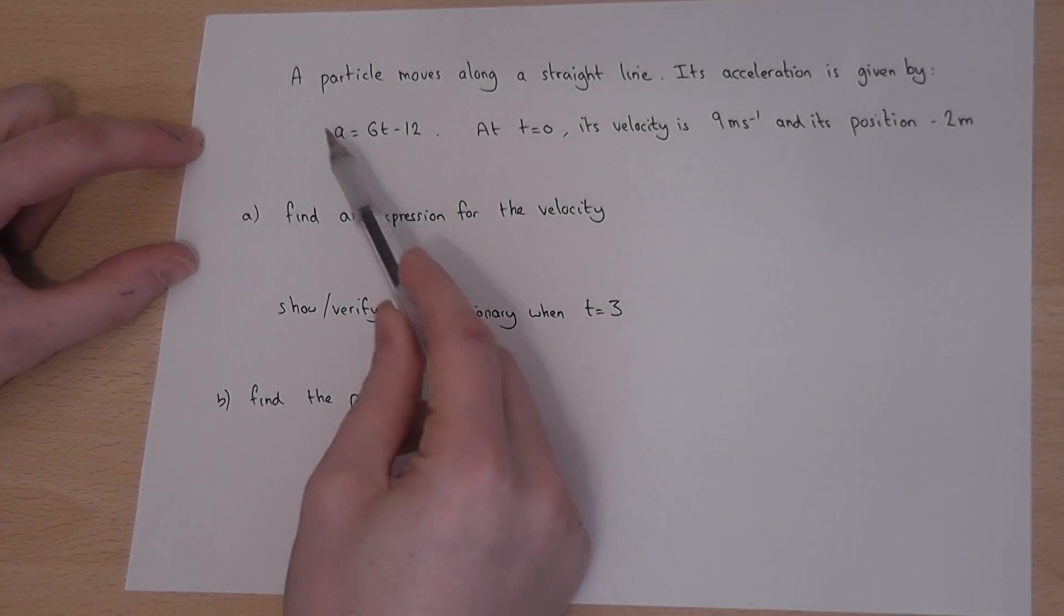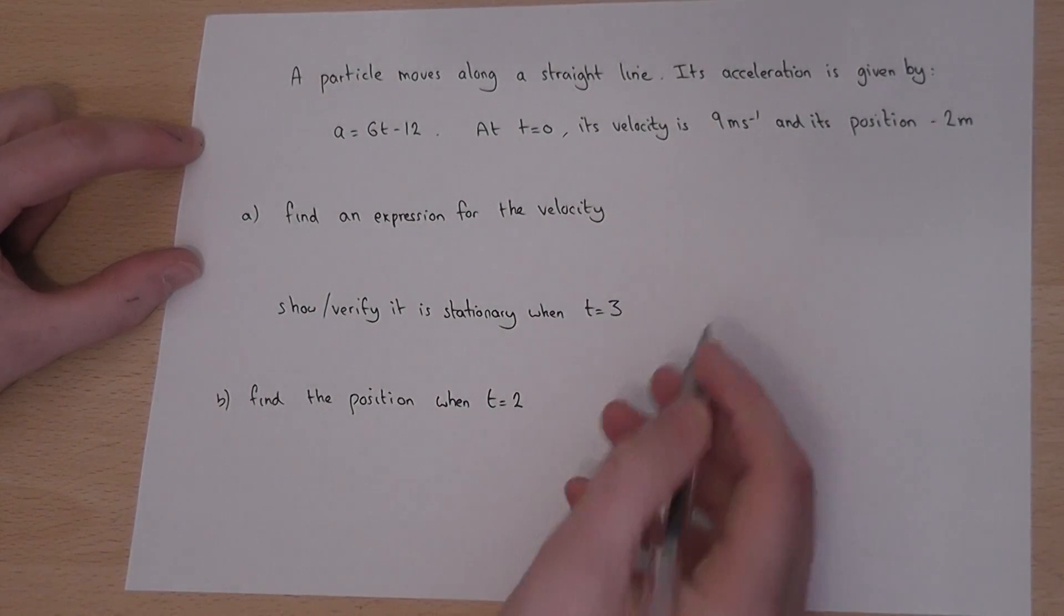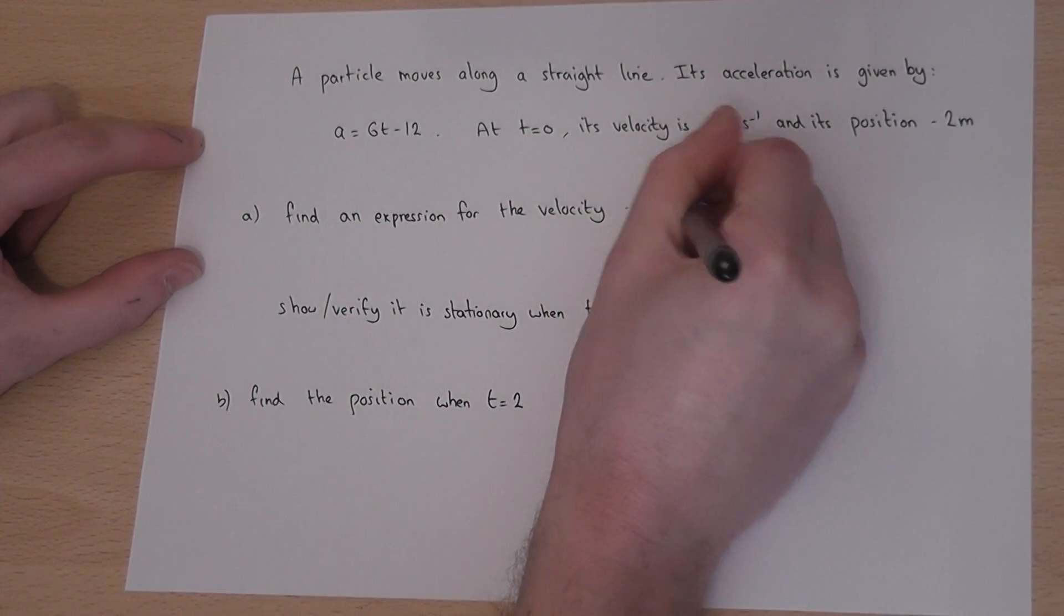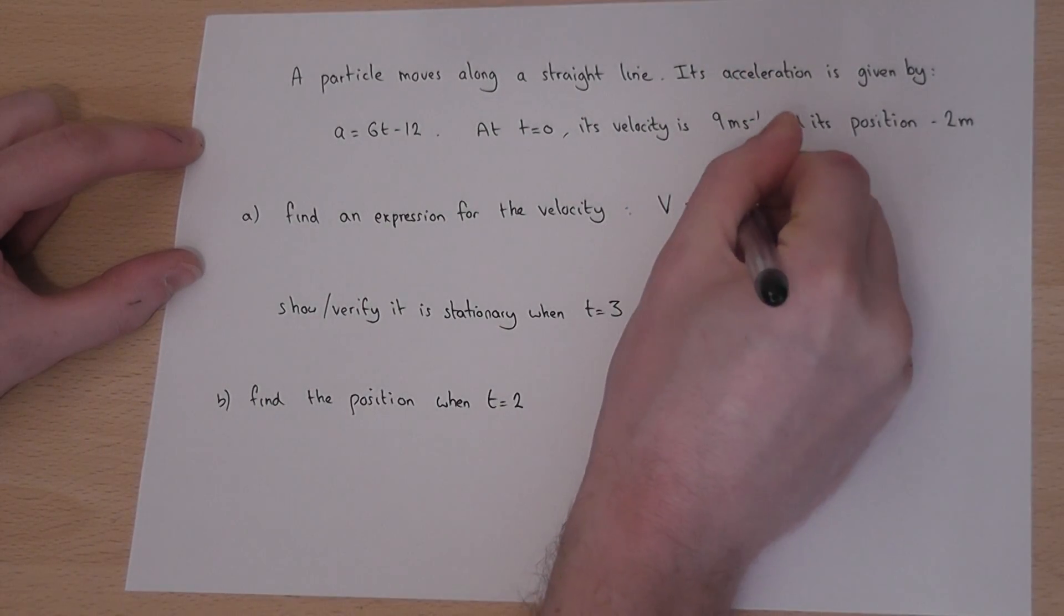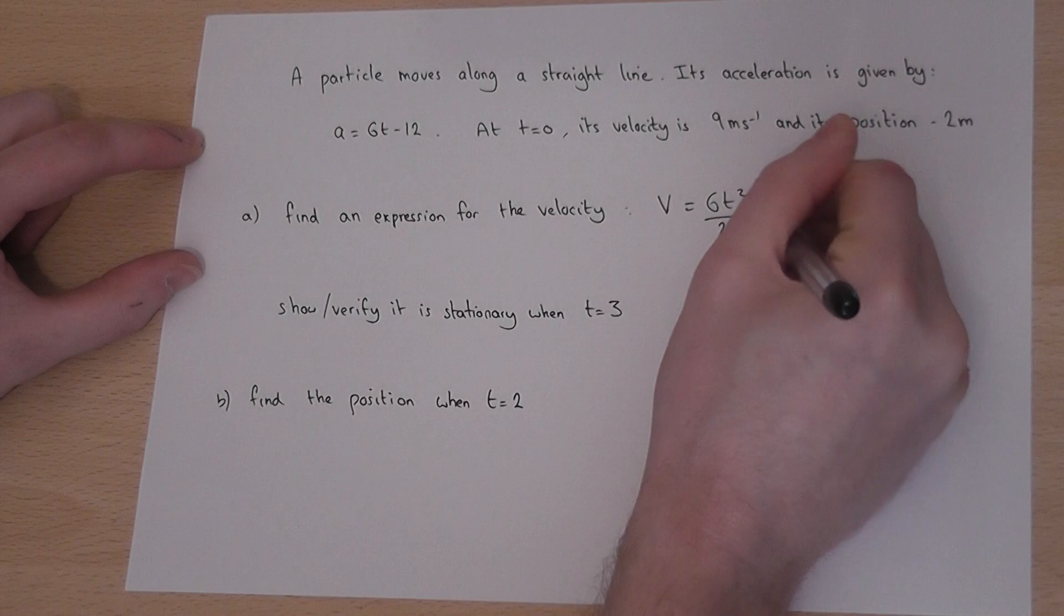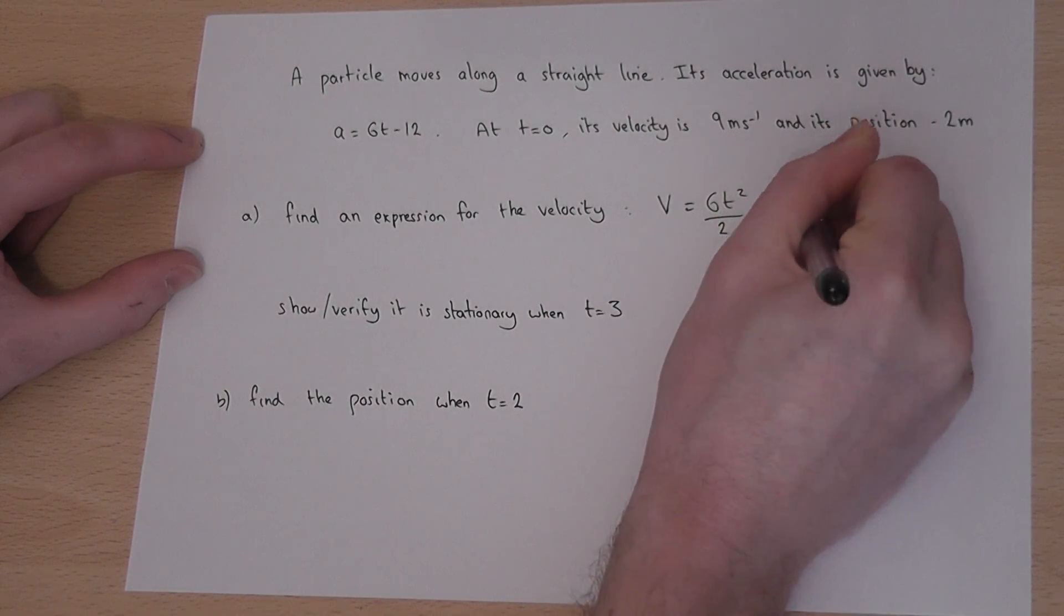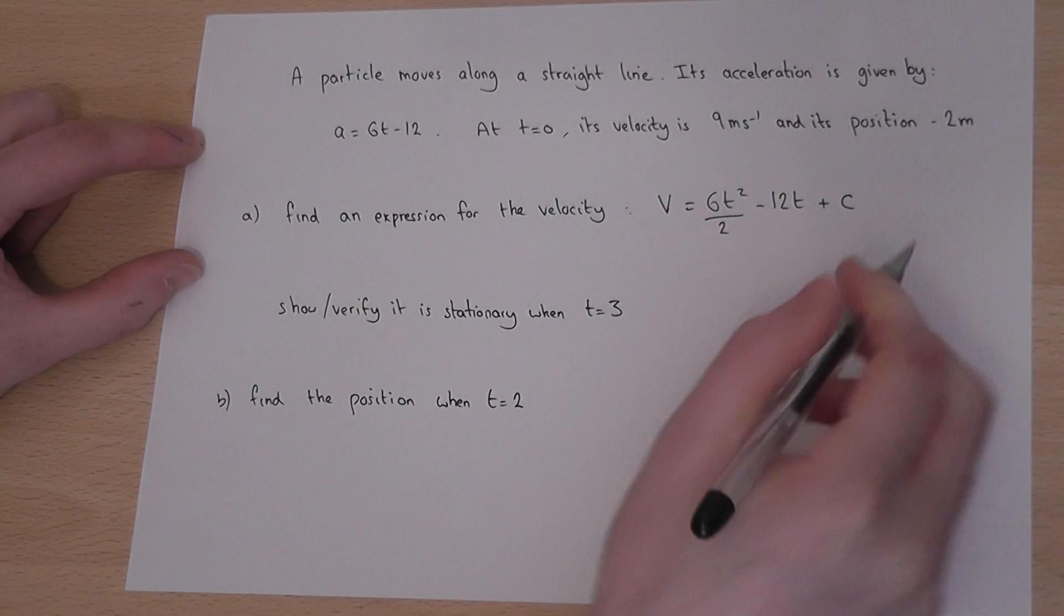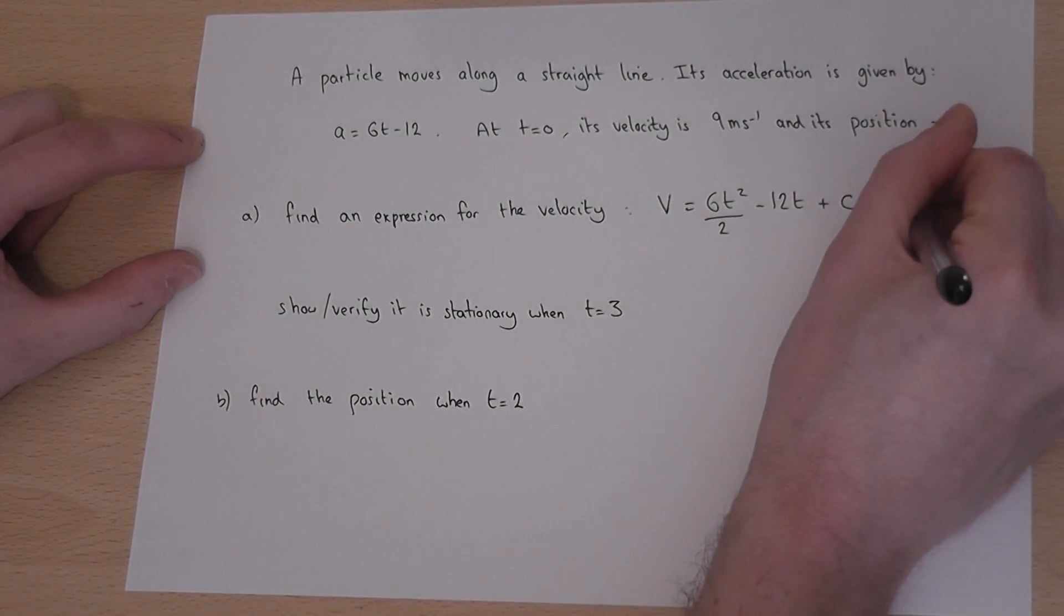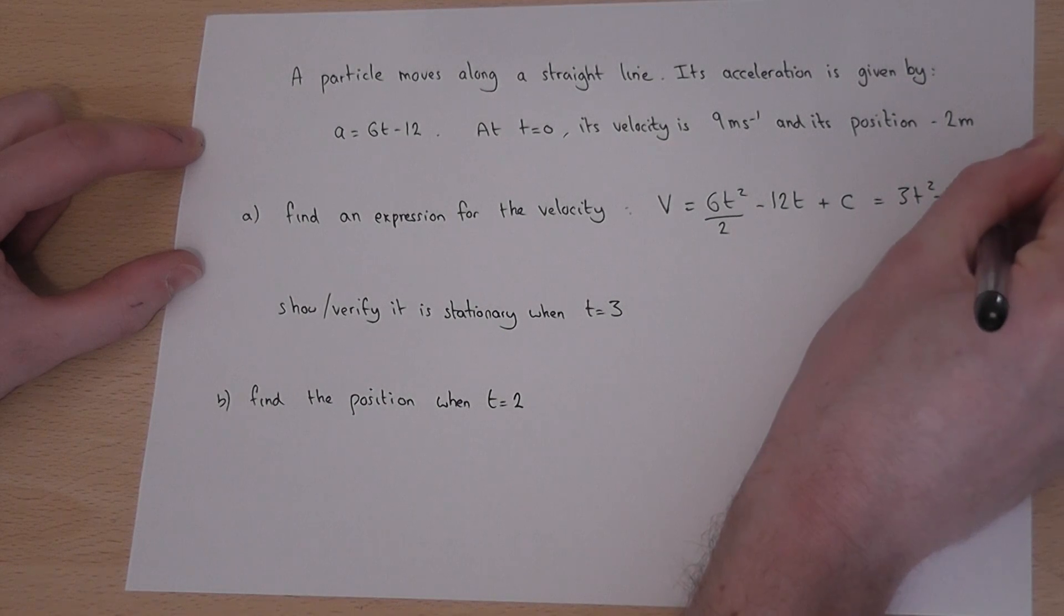To get from acceleration to velocity we integrate. So v will equal, now 6t integrates to 6t squared over 2, take away 12t, and don't forget the plus c. So v equals 3t squared minus 12t plus c.